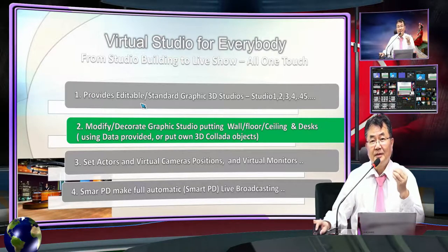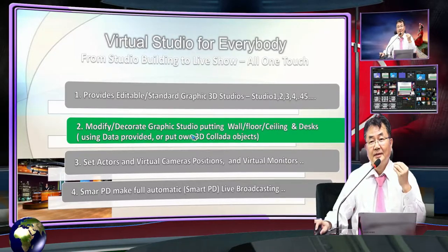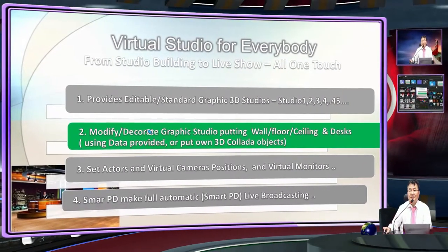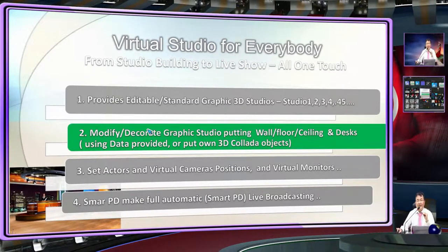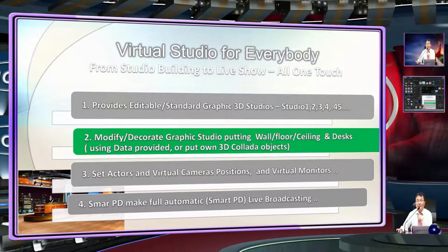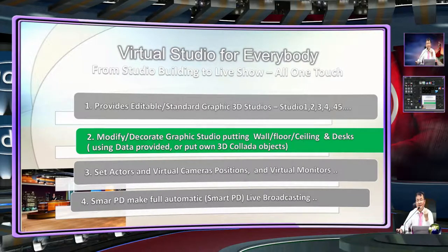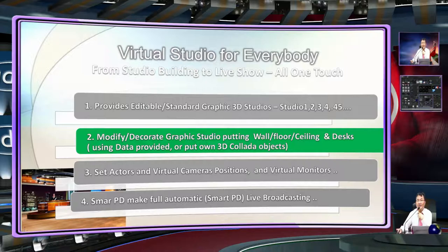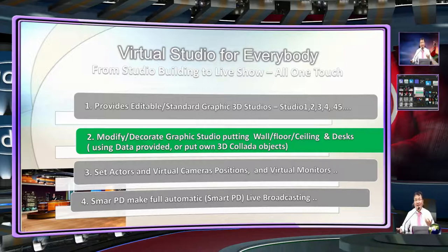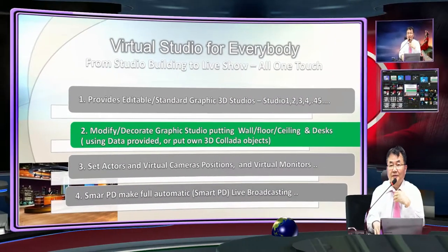편집 가능한 3D 스튜디오 안에서 수정하고 변경하는 과정이 주어집니다. 만약 모니터 위치를 다르게 하고 싶다면, 프로그램 안에서 그 모니터를 키우거나 줄이거나 커브를 줘서 회전하는 것이 다 실시간으로 이루어집니다. 필요에 따라 바로 위치나 배경을 변경시키면서 사용할 수 있게 된 기능이 바로 I 스튜디오, V 스튜디오의 기능이고, 방송이 매일 다른 형태로 만들어질 수 있게 됩니다.